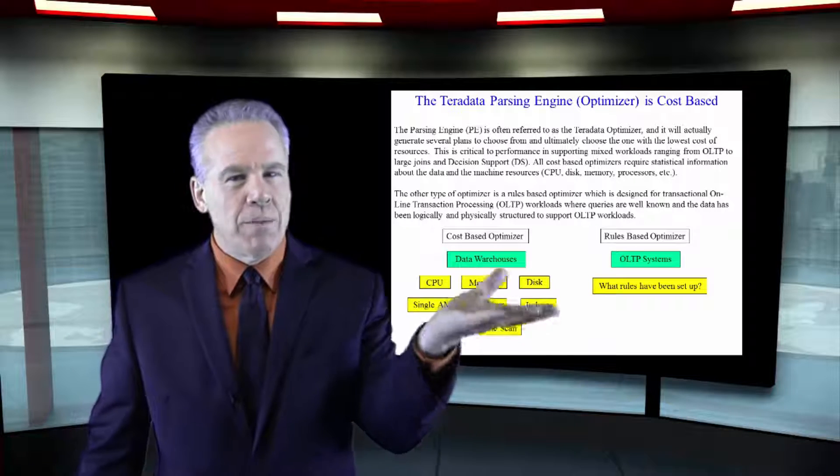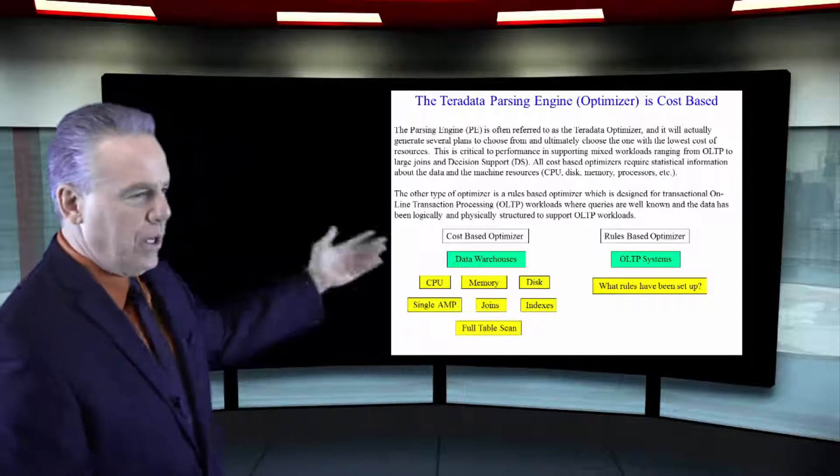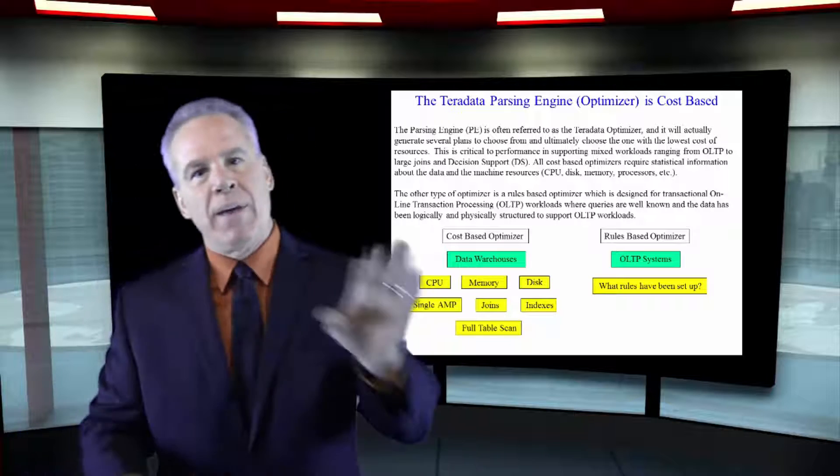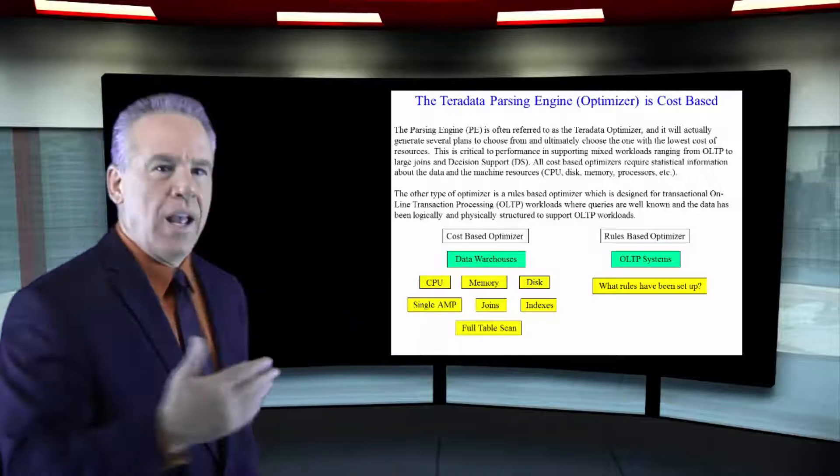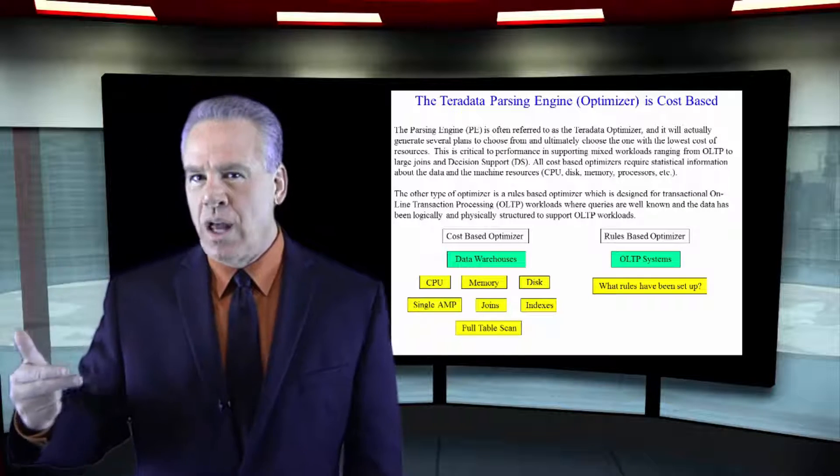Cost-based looks at much more things. It looks at the CPU, the memory, the disk. Hey, is this a single amp? Am I going to join this? Should I use indexing, full table scan? And that's what Teradata utilizes.